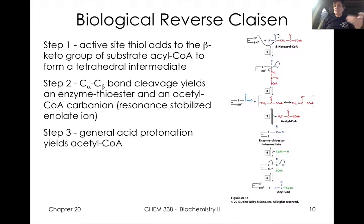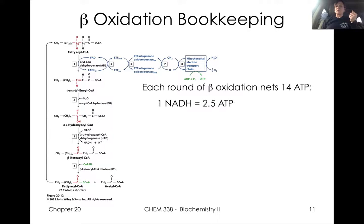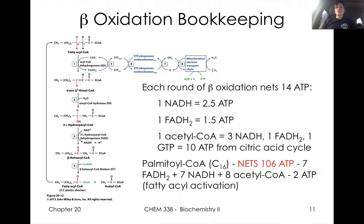We'll spend a little bit of time looking at the enzyme active site, detailing different species acting as general acids, general bases, covalent catalysts, and so forth. We'll also remind ourselves what happens with each round of beta-oxidation: 14 ATPs — the acetyl-CoA giving us 10 ATPs, and then each NADH and FADH2 contributing a net of 4 ATPs. We'll go through a little bit of bookkeeping with the C16 fatty acid, which gives us 106 ATP.